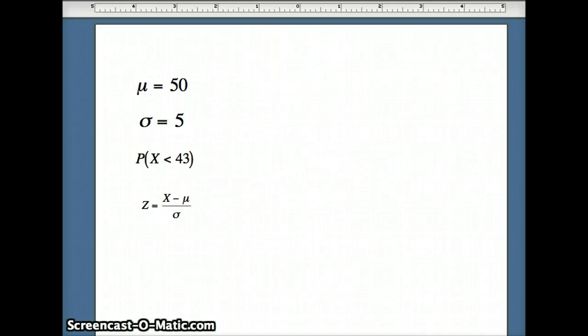So let's take a look at our problem. Here's our information: mean, sigma, and our question - probability x is less than 43, and our rule that z is x minus mu over sigma.